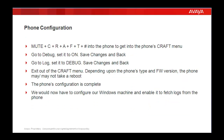The installation of the software on our laptop is now complete. We will go inside the phone and make configurations. Get into the mute craft menu of the phone, go to debug, set it on, go into log, and set it to debug. Exit out of your craft menu. Depending upon your phone's type and firmware version, your phone may or may not take a reboot. The phone's configuration is now complete.